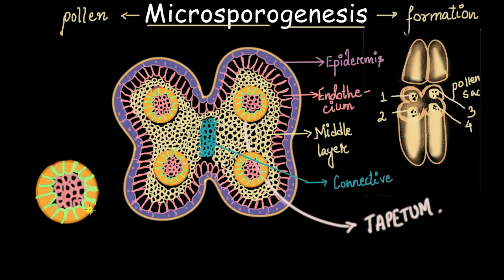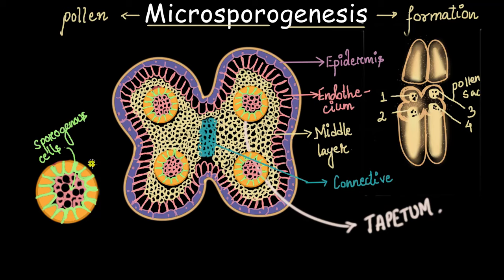These tapetal cells are large and have a lot of cytoplasm, and they can provide nourishment to the cells in the inner layer. These very tightly packed inner cells are called sporogenous cells. They are called sporogenous because these cells will later become microspores. However, not all cells will develop into a microspore — some cells will disintegrate on the way and be consumed by surrounding cells, acting as a food source. The few cells that remain will develop into a microspore or a pollen.